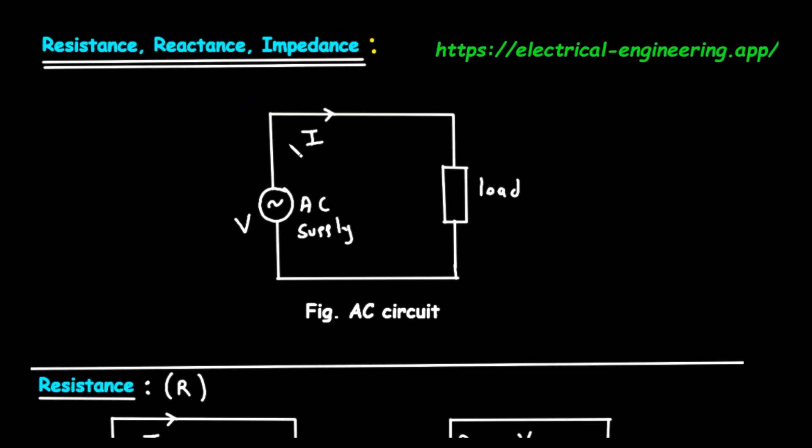Let's begin with the image at the very top. It shows a basic AC circuit. On the left, we have a circle with a wavy line inside it. This is the symbol for an AC power supply, which provides a voltage, labeled V, that constantly changes direction, or alternates.